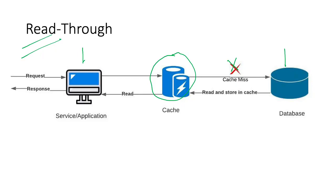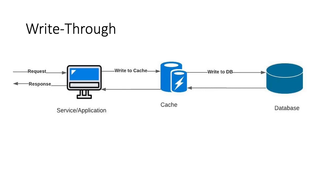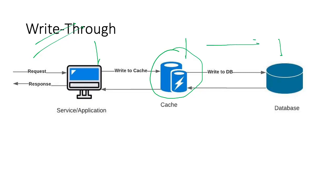Now let's talk about the write-through strategy, which is another caching strategy under the umbrella of cache as a system of record. Here again, the cache sits in between the application and the database, and any writes to the database go via the cache. The application writes into the cache, and the cache in turn writes it into the database. There is no direct benefit — in fact, you are introducing latency between the cache and the database layers.